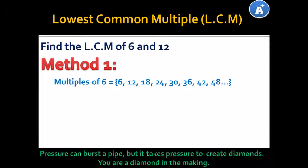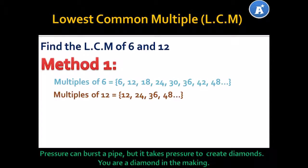Let's look at Method 1. We list the multiples of 6: 6, 12, 18, 24, 30, 36, 42, 48 — and they go all the way to infinity. Let's look at the multiples of 12: 12, 24, 36, 48 — and they as well go all the way to infinity.